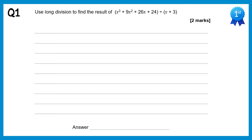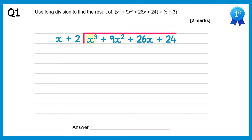For this first question we're going to draw a bus stop, write the cubic inside and the linear term outside. We divide x cubed by x which gets x squared, then multiply x squared back through by this linear term. x squared times x is x cubed and x squared times 2 is plus 2x squared. Now we subtract these two: x cubed take x cubed is 0, 9x squared take 2x squared is 7x squared.